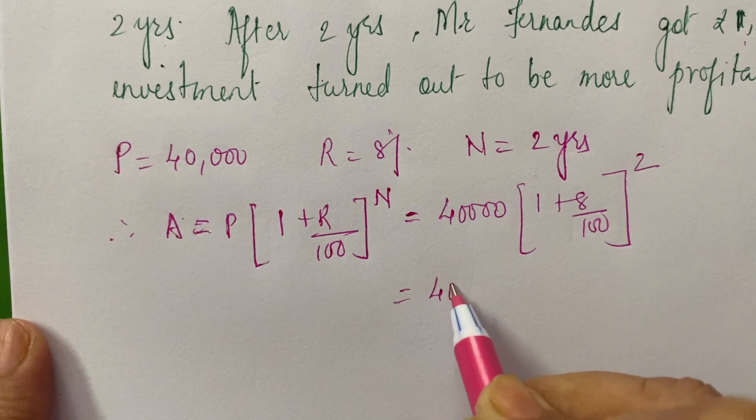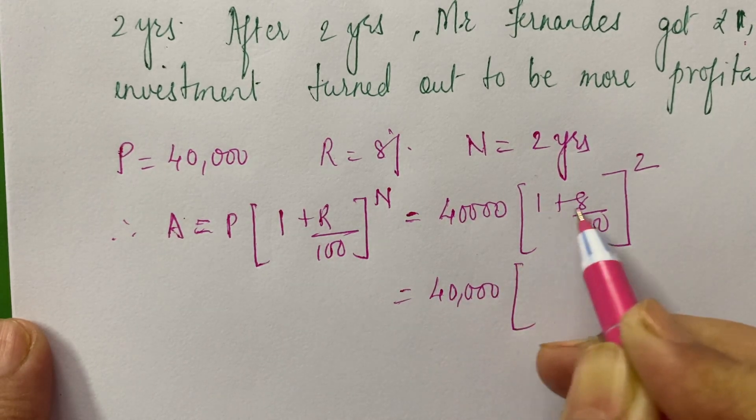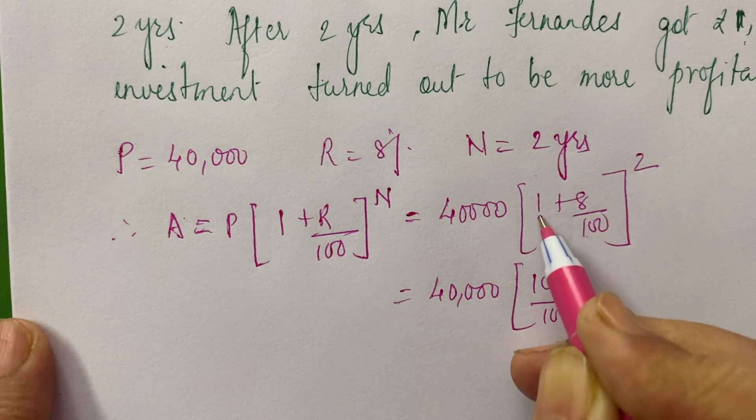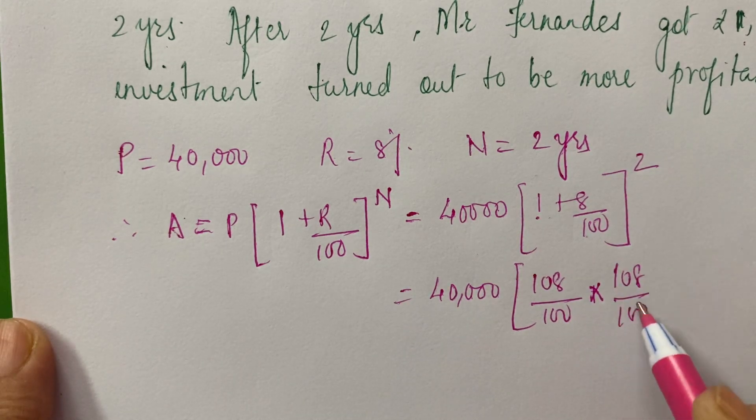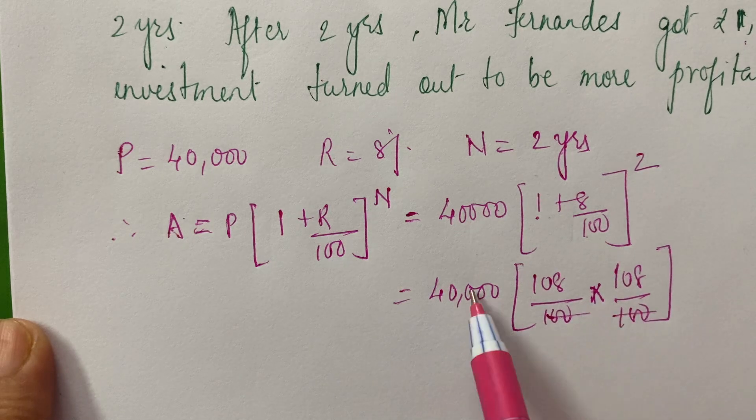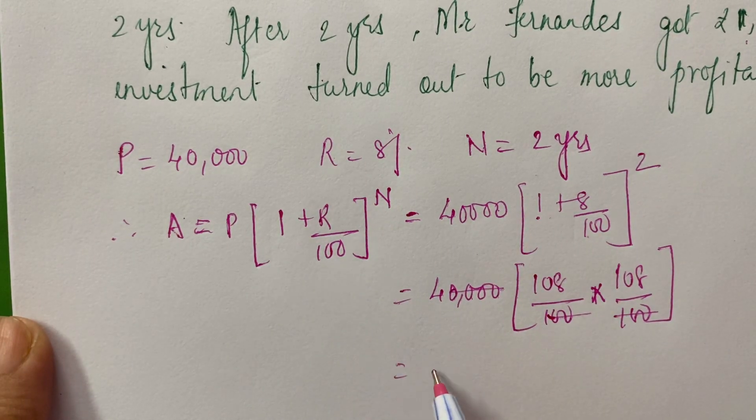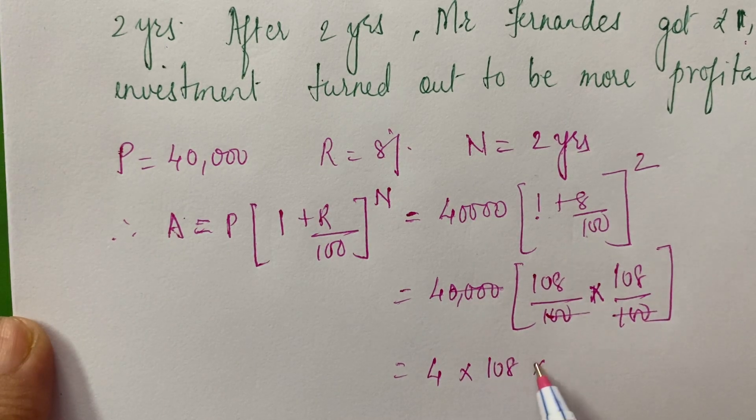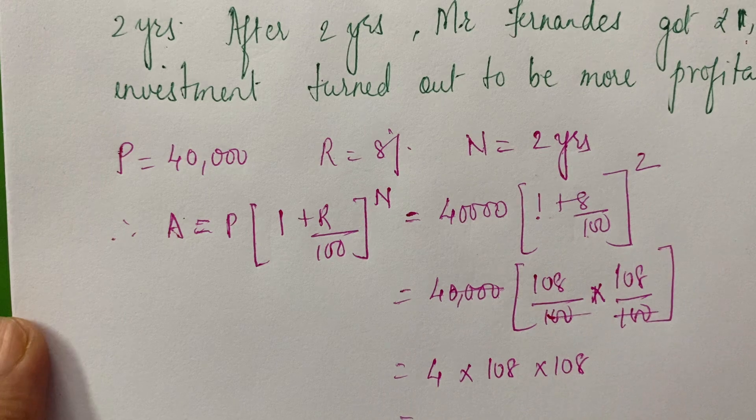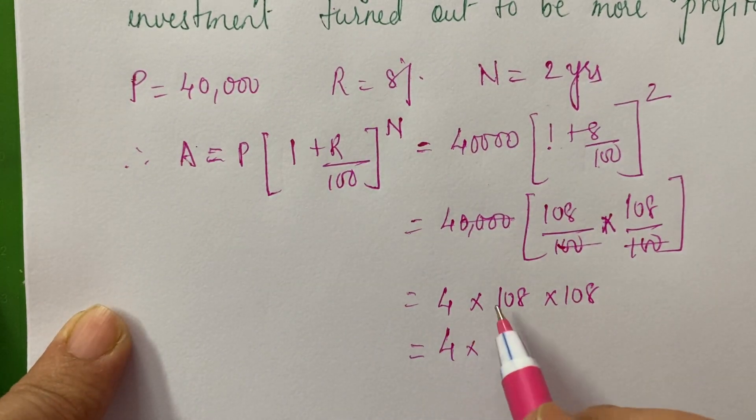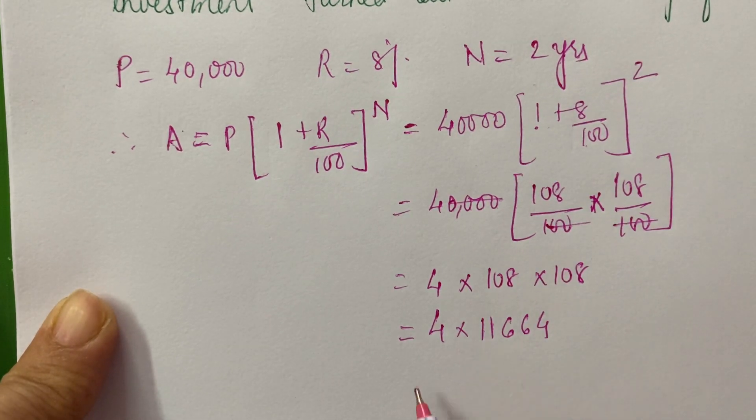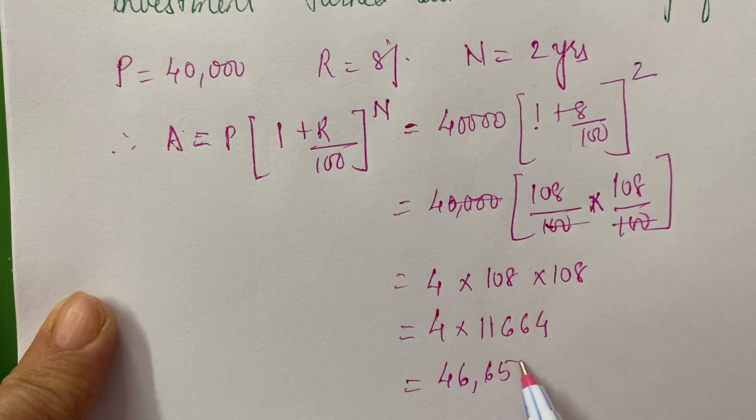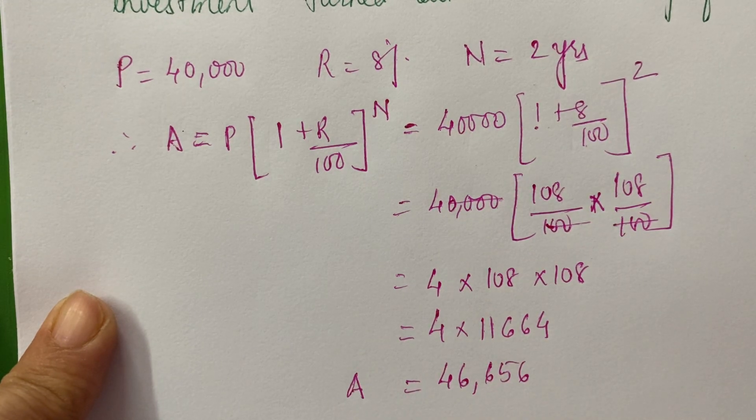So, that will give us 40,000. How many times? Two times. 100, once 100 plus 8. How many times it is? Two times because it is raised to the power 2. So, your 4 zeros will be cancelled. So, you have to multiply 4 into 108 into 108. Now, the square of 108 comes out to be 11,664. So, you multiply this by 4, you will get 46,656 as the amount.